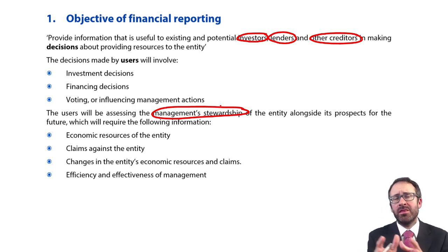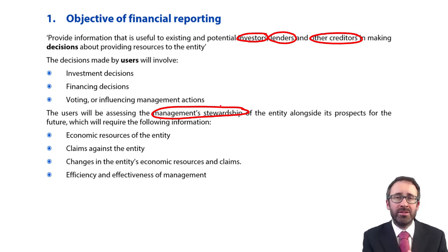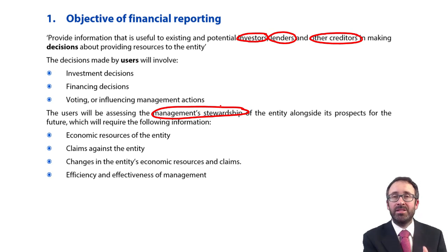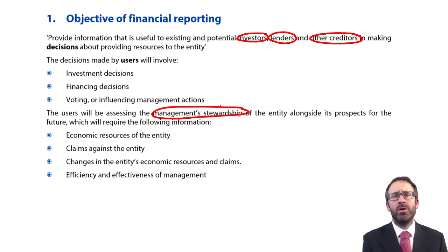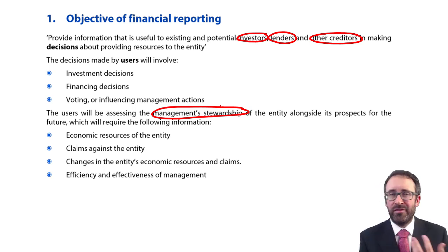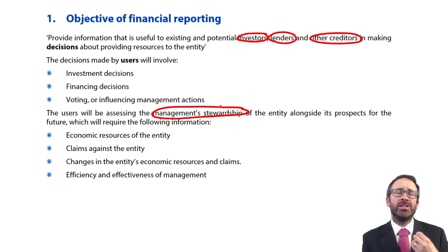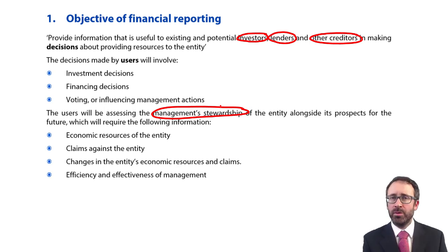What it allows users to do is think about how well this business is going to do in the future. So investors can think about the level of dividends they'll get and the potential growth in share price if it's a listed business. The lenders can think about ensuring they're going to get their cash back. Similarly, the other creditors — your suppliers and tax authorities. The information they need is the financial statements; that's the objective of financial reporting: to show a set of financial statements that demonstrate management stewardship.